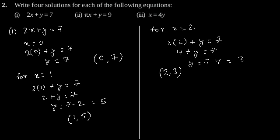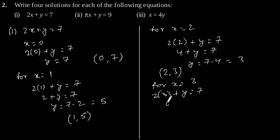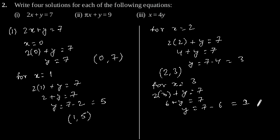Now let's put x is equal to 3. By putting the value x is equal to 3 in the given equation, we will get 2 into 3 plus y is equal to 7. This gives 6 plus y is equal to 7, which gives y is equal to 7 minus 6, so y is equal to 1. Our fourth possible solution is (3, 1).